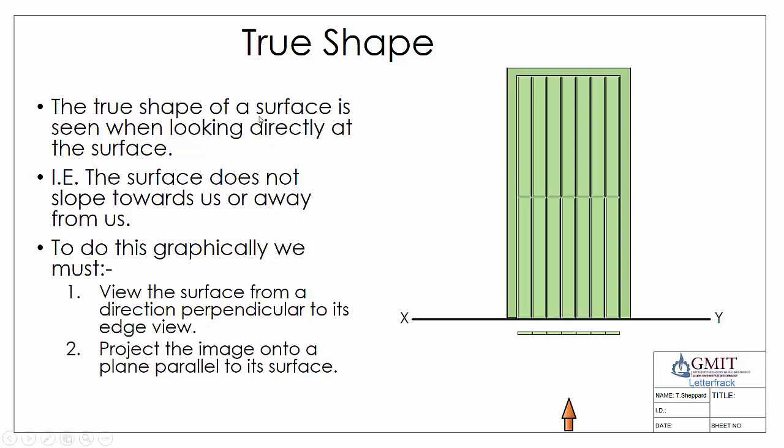First of all, the true shape of a surface is seen when looking directly at the surface. Another way of saying that is that the surface does not slope towards us or away from us. If we take the example of a two-half door, we can see here's the front elevation and here's the plan view. In our plan view we're looking straight in front of the door, and in that case our front elevation we will see the door as a true shape.